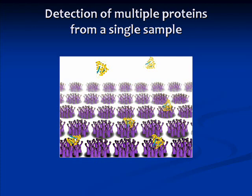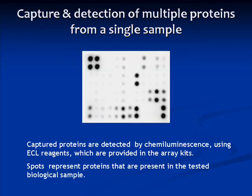Detecting multiple related proteins allows scientists to have a global perspective of signaling events occurring in a disease state, or perhaps in response to a therapeutic treatment. This is an example of the output of a membrane-based antibody array. Each spot on the membrane indicates the presence of a different cytokine.